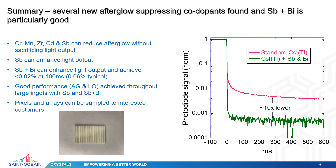To summarize, we found five good co-dopants which suppress afterglow without suppressing light output, with antimony plus bismuth at around one part per million being particularly good. We have been sampling pixels and arrays to interested customers, so if anyone listening is interested, please contact us at our booth about getting samples. Thank you.